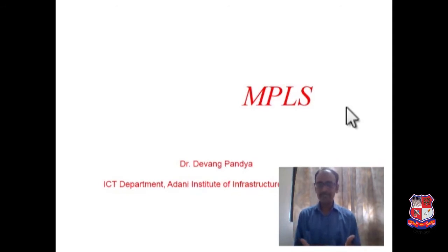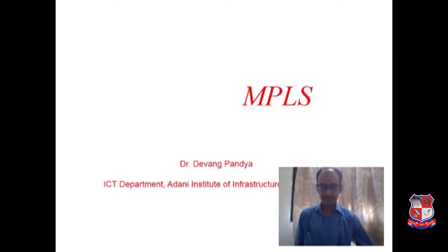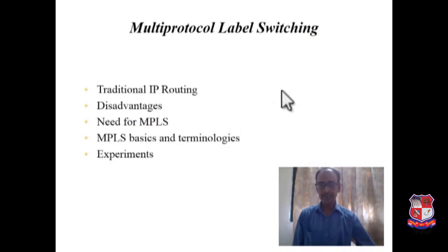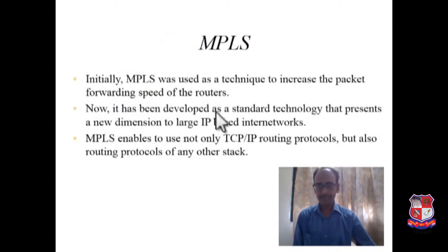With the use of MPLS, we can speed up the forwarding of packets or flow, and because of that we can achieve quality of service parameters. In MPLS, routes can also be changed based on flow-by-flow basis. So just to summarize, I have discussed the traditional IP routing disadvantages and why we need MPLS. Initially MPLS was used as a technique to increase the packet forwarding speed of routers.